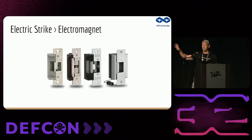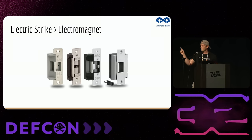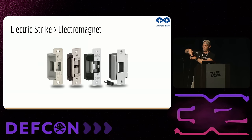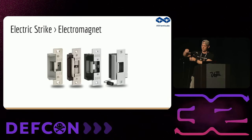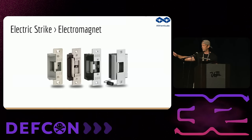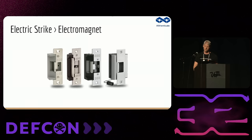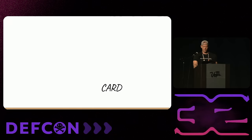When looking at these systems, there are electromagnets — huge chunky ones over the top — but there are also electric strikes. These are solenoids that have a pin stuck in the hole when unpowered, and when you power it, it pulls the solenoid out. These are far better: you can't get locked in your building, and you can't vape into them to pull a solenoid up. So if given an option, whenever you can, put in an electric strike.